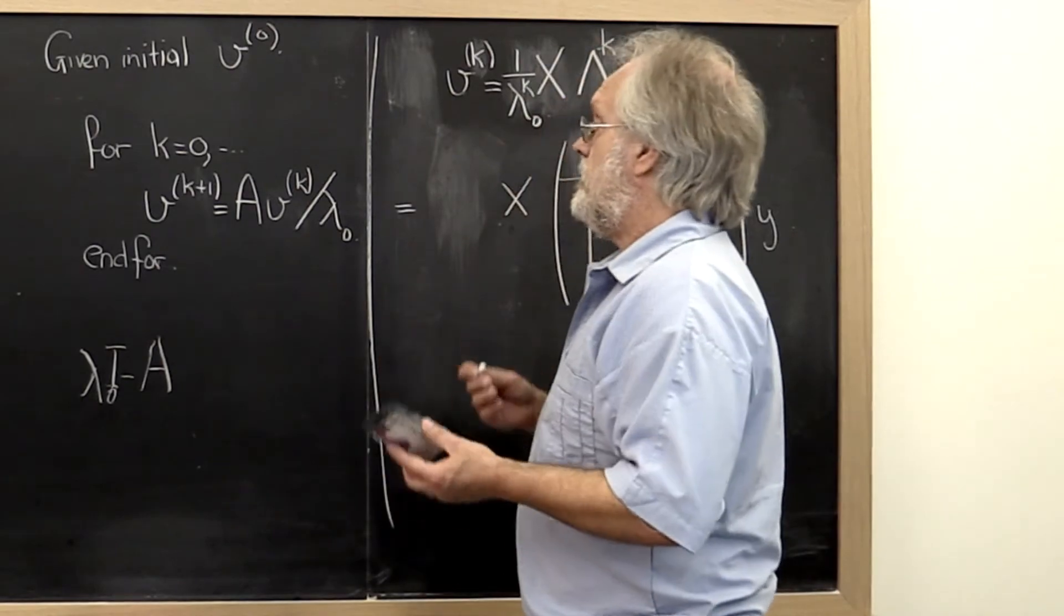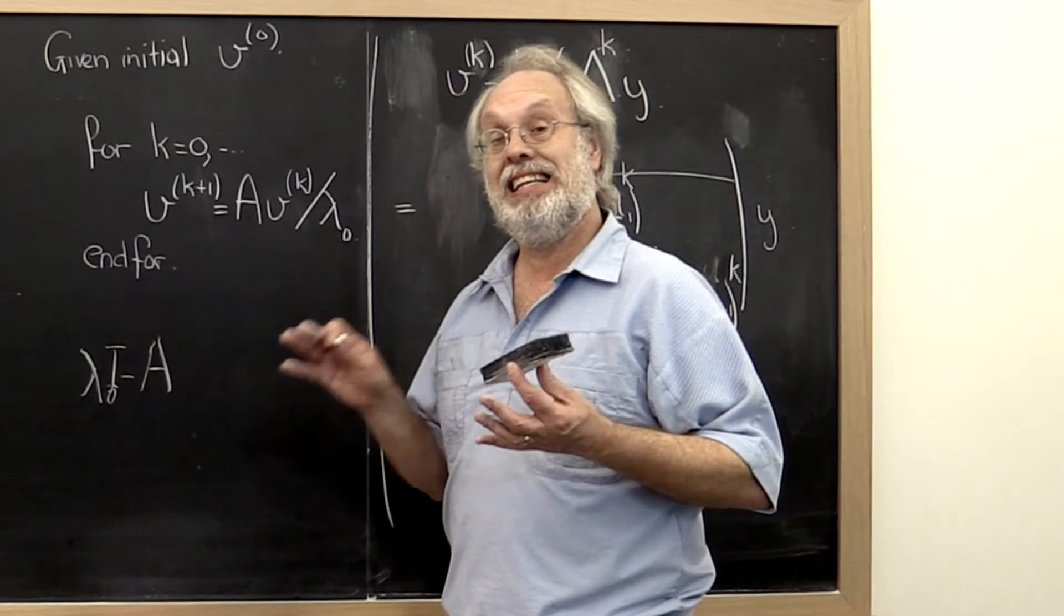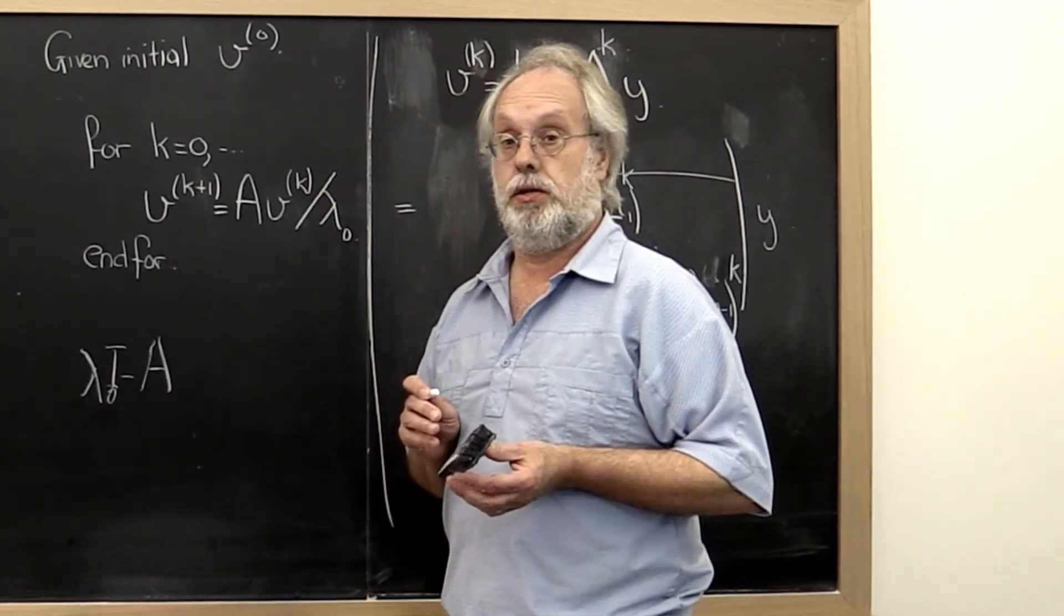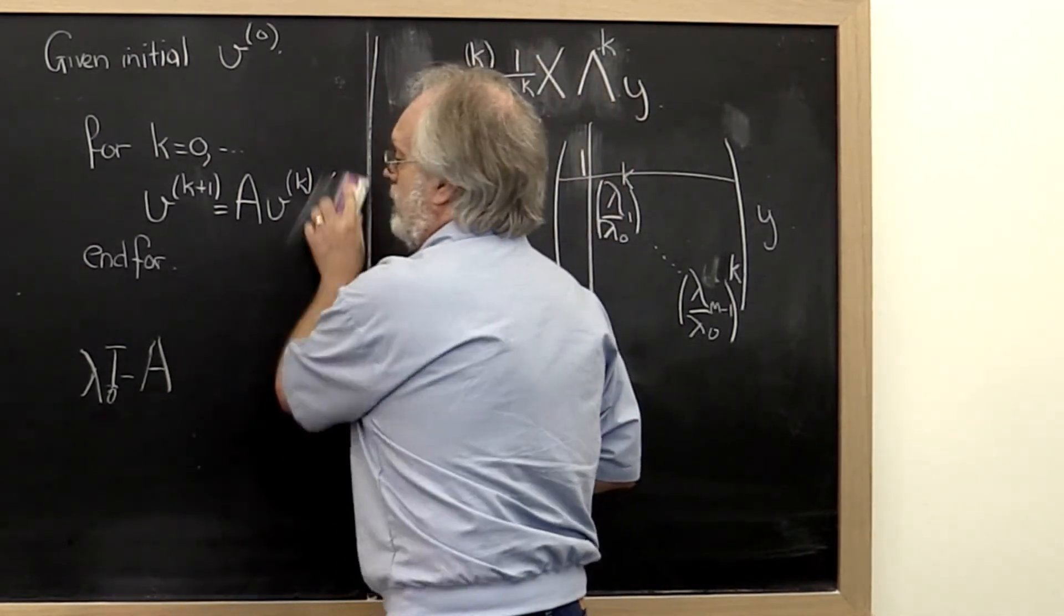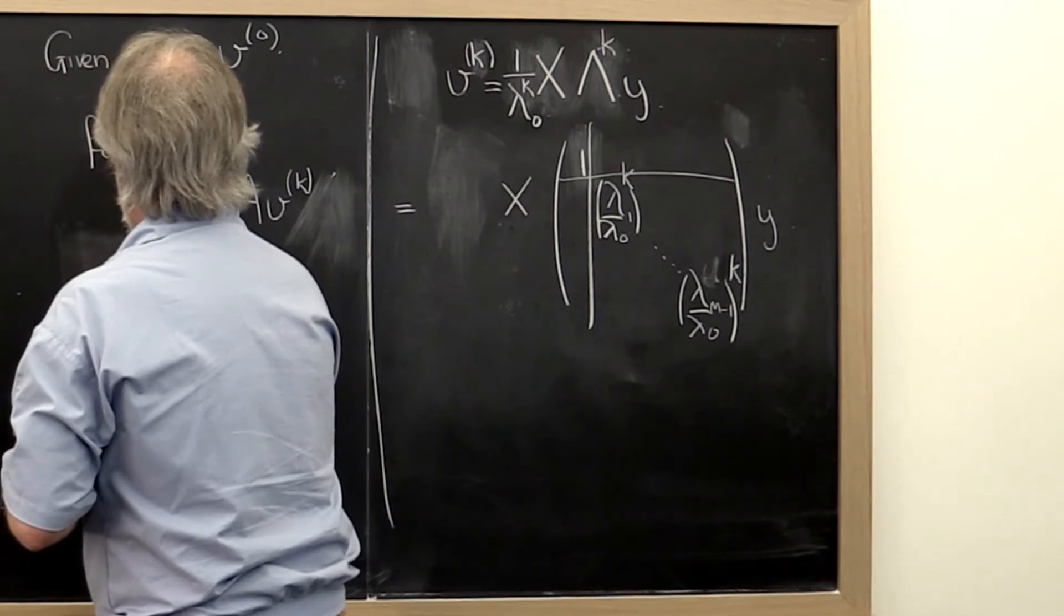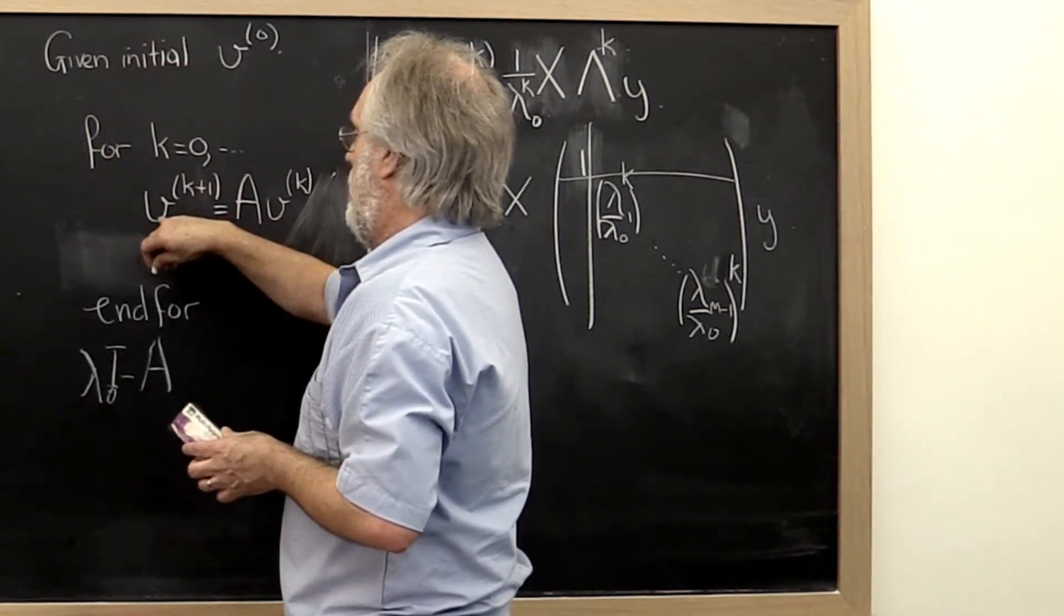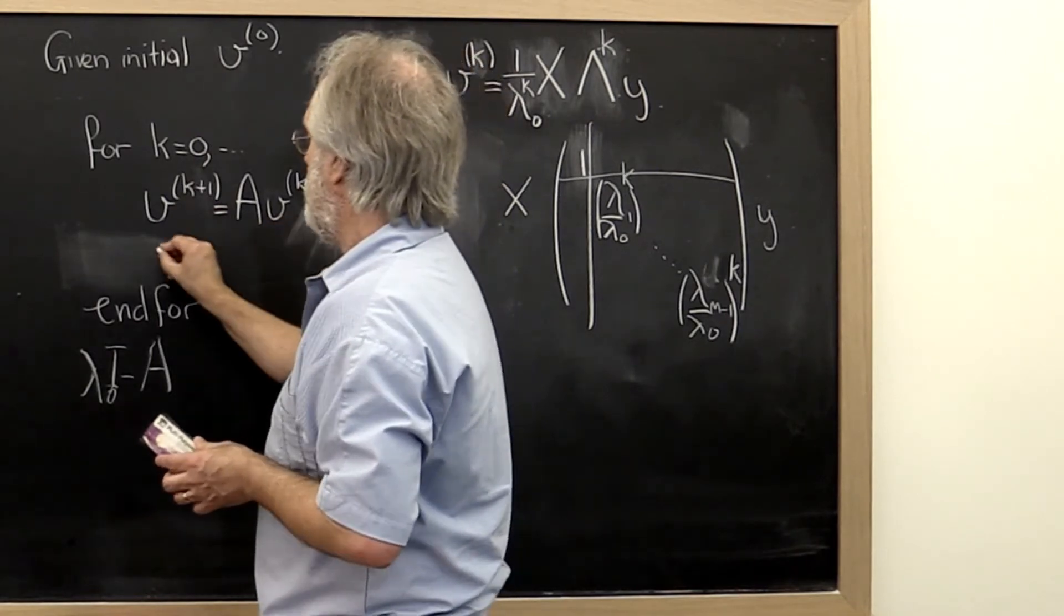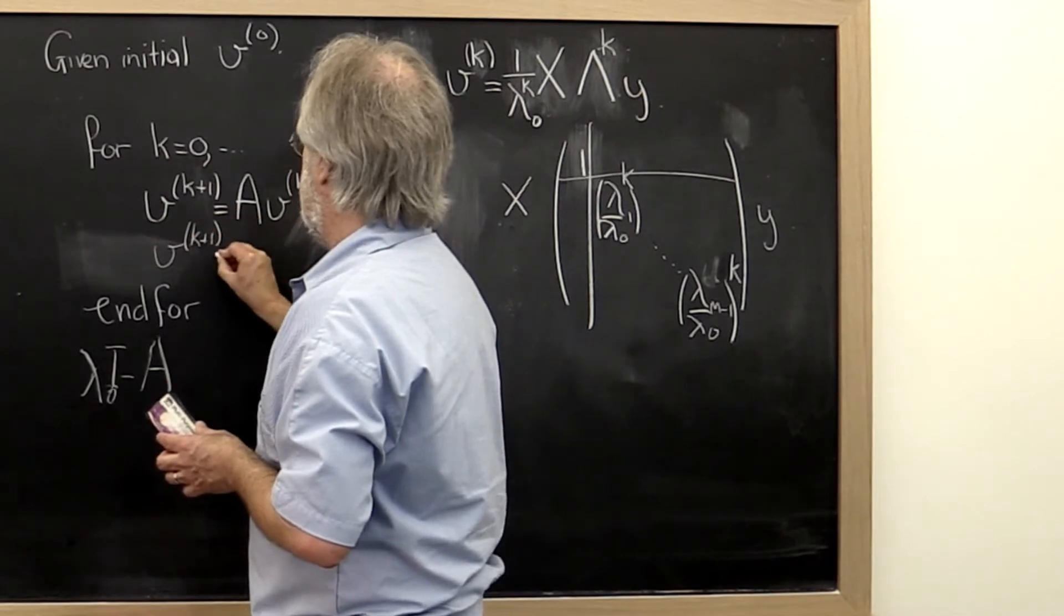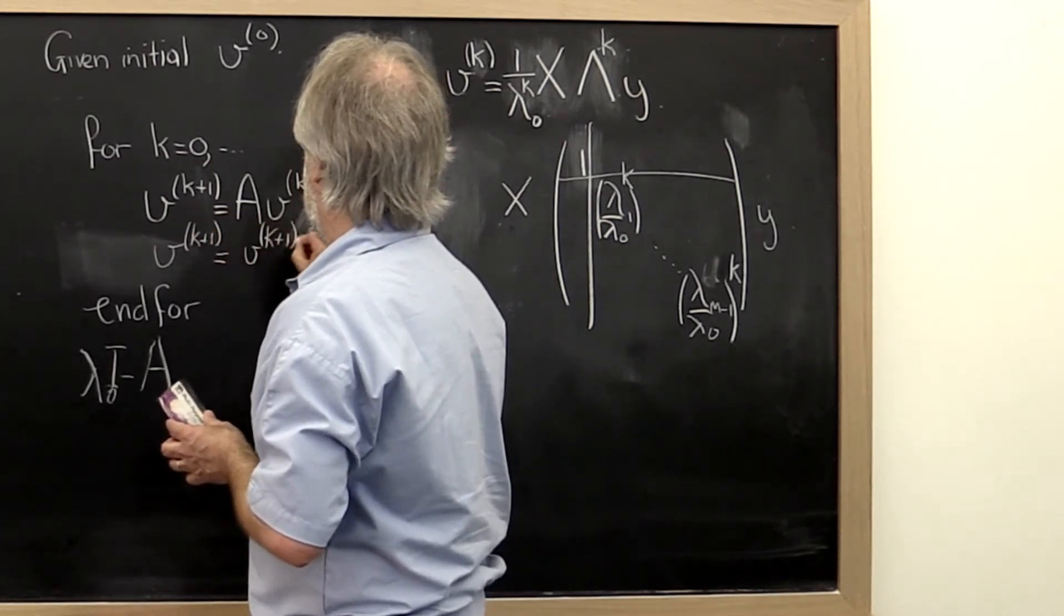What do we do instead? Well, we recognize that we're only interested in the direction. So what we could do at every iteration is say, okay, let's just make this a temporary vector. And once we've computed it, let's take it and let's scale it so that it has length 1.